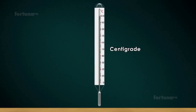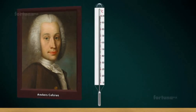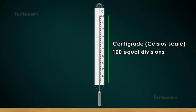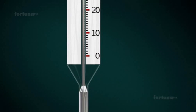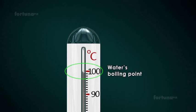A centigrade thermometer also known as the Celsius scale and named after the Swedish astronomer Anders Celsius who developed it has 100 equal divisions. It begins at 0 degrees, water's freezing point and ends at 100 degrees, water's boiling point.